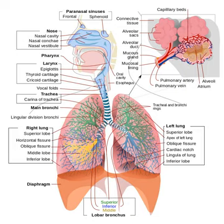Other animals, such as insects, have respiratory systems with very simple anatomical features, and in amphibians even the skin plays a vital role in gas exchange. Plants also have respiratory systems but the directionality of gas exchange can be opposite to that in animals. The respiratory system in plants includes anatomical features such as stomata, that are found in various parts of the plant.